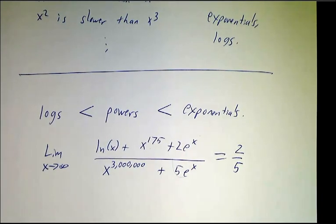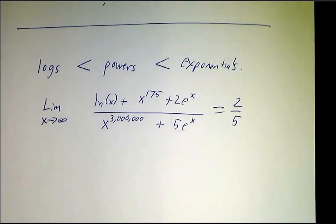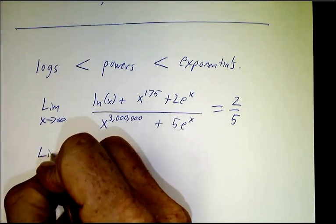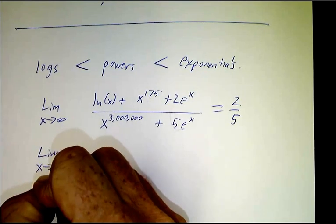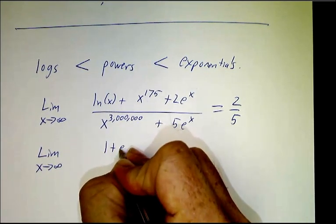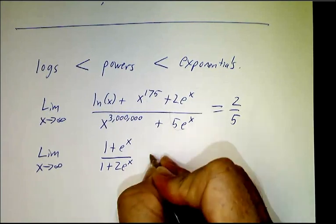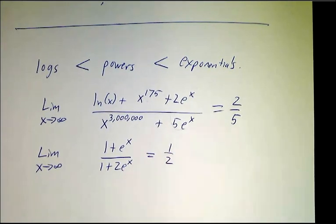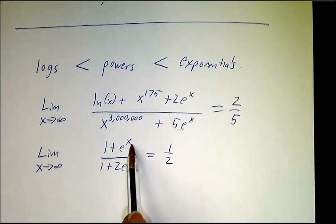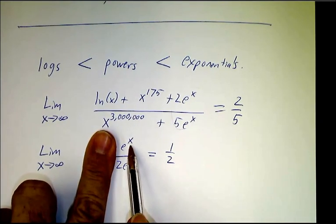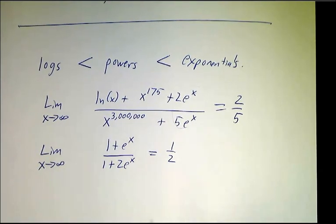Now you've got to be careful because sometimes what happens as you go to infinity or what happens as you go to minus infinity is different. If I want the limit as x goes to infinity of 1 + e^x over 1 + 2e^x, that's going to be 1/2 because as you go to infinity the exponential is growing and the 1 is negligibly small compared to the e^x.